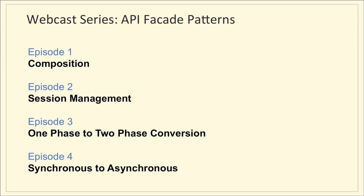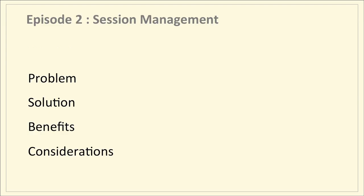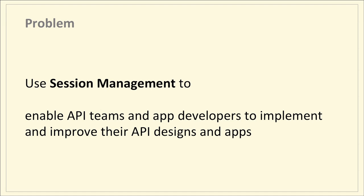We are doing episode 2 of a four-part series on API facade patterns. In the first episode we discussed the service composition pattern. Today we will talk about the session management API facade pattern. In the following two episodes we shall talk about one-phase to two-phase conversion and synchronous to asynchronous. We structure these sessions by covering the problem statement, solution aspects, solution benefits, and then Q&A.